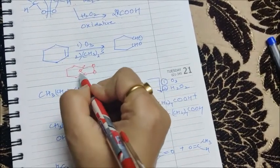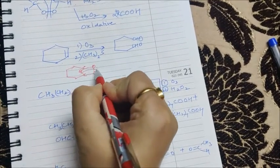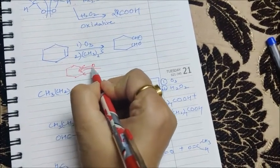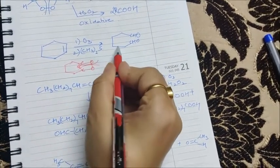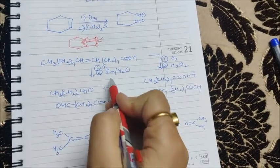So this kind of ozonide will be formed. After you will be adding CH3-S-CH3 or zinc water, this kind of breakage will be seen and you will get CHO here and CHO here as the product is shown.